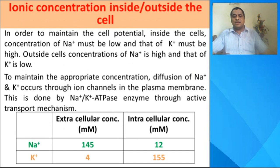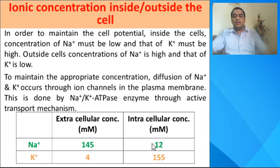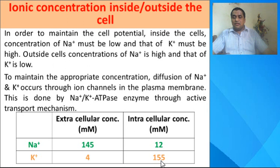Let us look at the ionic concentration in extracellular and intracellular environments. Sodium ion concentration is 145 millimolar in the extracellular environment and 12 millimolar in the intracellular environment. Potassium ion concentration is 4 millimolar extracellularly and 155 millimolar intracellularly. So sodium ion concentration must be lower inside the cell and potassium ion concentration must be higher inside the cell. To maintain this appropriate concentration, diffusion of sodium and potassium ions occurs through ion channels in the plasma membrane via the sodium potassium ATPase enzyme through active transport.